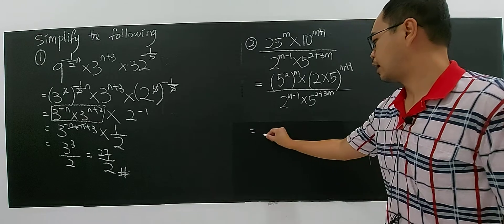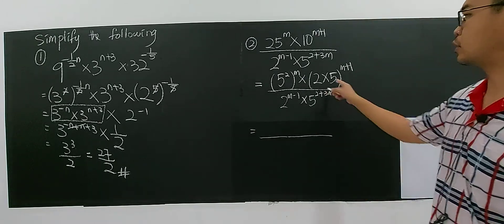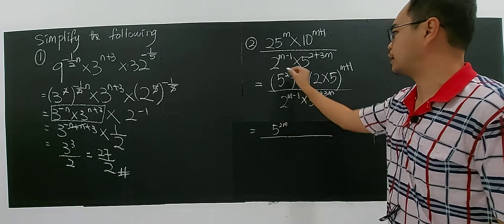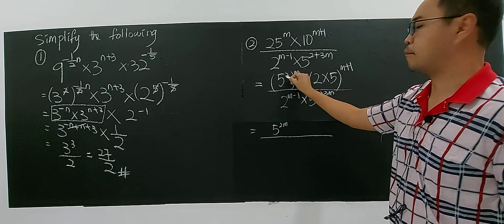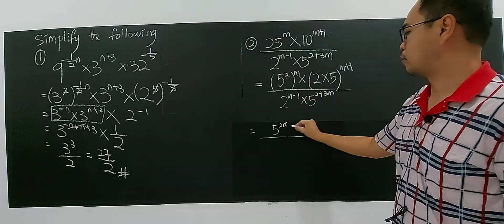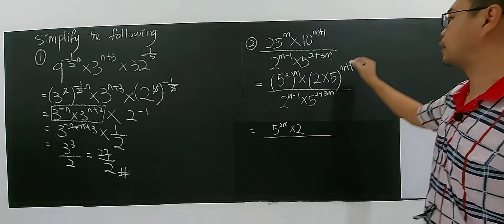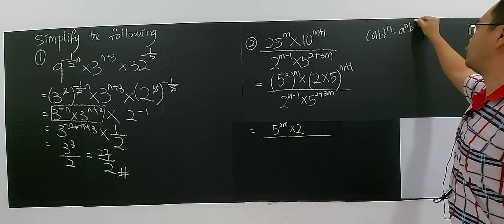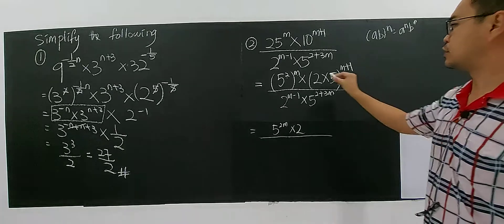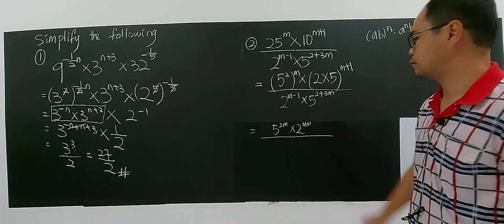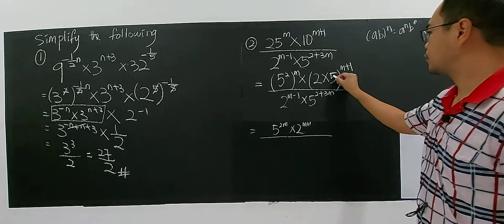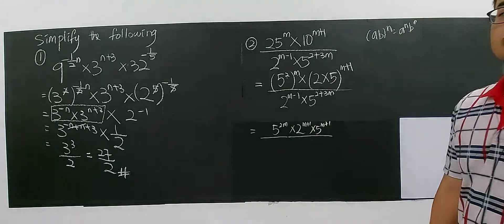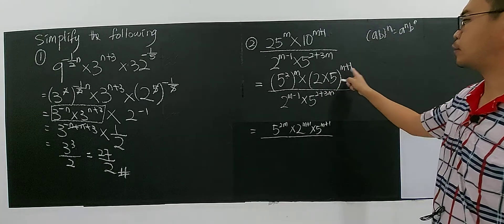So then you have 2M minus 1 multiplied by 5 to the power of 2 plus 3. Nothing to modify here because the bases are different. And 5 already the lowest base. So now let's look at how I deal with all this. Okay, 5 power of 2M, you can multiply. I apply the rule of indices. A, MN, 2M. So multiply with 2. This one I apply this rule. A, B to the power of N, which is A power of N and B power of N. So which is 2 to the power of M plus 1 and 5 to the power of M plus 1.